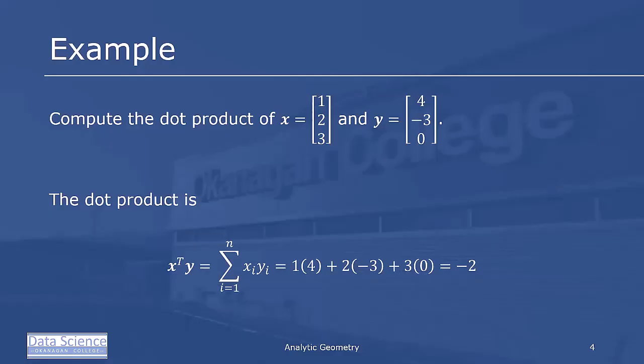In the first example, we're going to compute the inner product of x and y using the dot product as our inner product. So here the dot product is x transpose y, which is the sum of the x_i y_i's: 1 times 4 plus 2 times negative 3 plus 3 times 0, which equals negative 2.